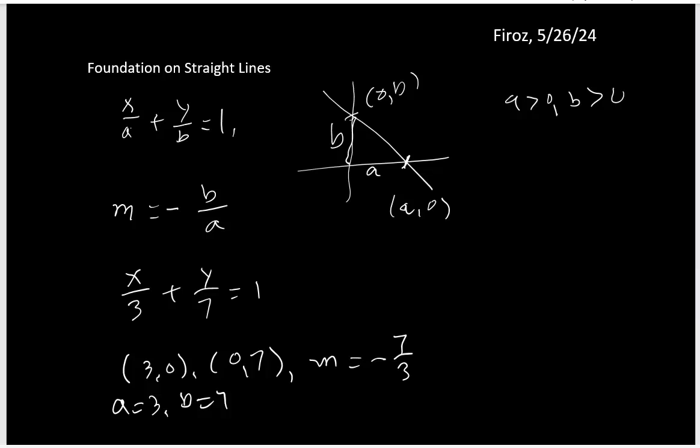Let me take another example. Say I have x over 9 minus y over 7 equals 1. So then in this case a is 9 and b is negative 7. So then the slope m is negative b over a, so b is negative 7, a is 9. That gives me 7 over 9.